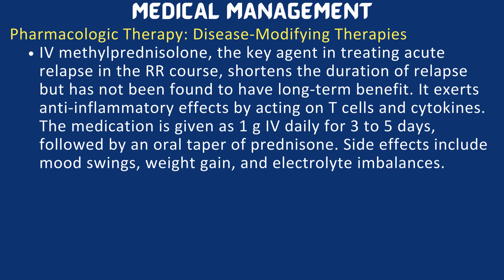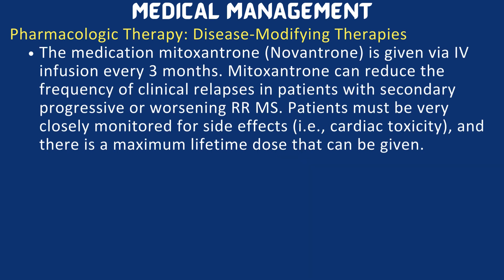IV methylprednisolone is the key agent in treating acute relapse in the relapsing-remitting course. It shortens the duration of relapse but has not been found to have long-term benefit. It exerts anti-inflammatory effects by acting on T cells and cytokines. The medication is given as 1 gram IV daily for 3 to 5 days, followed by an oral taper of prednisolone. Side effects include mood swings, weight gain, and electrolyte imbalances. Mitoxantrone is given via IV infusion every 3 months and can reduce the frequency of clinical relapses in secondary progressive or worsening RRMS. Patients must be closely monitored for cardiac toxicity, and there is a maximum lifetime dose.